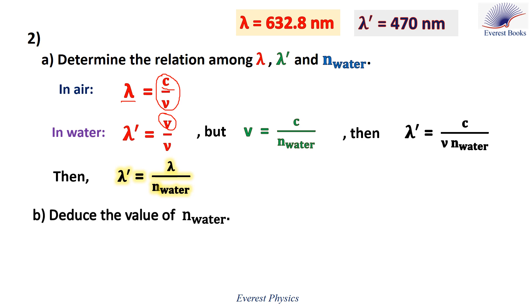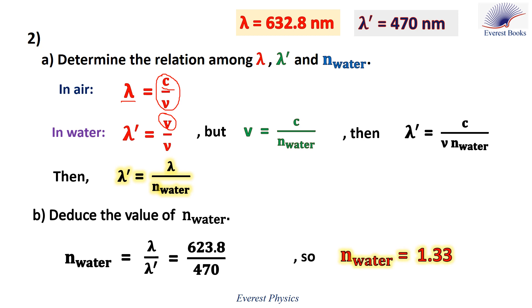Part 2b: deduce the value of n_water. Using the previous relation, n_water equals lambda over lambda prime. Lambda equals 632.8 nanometers and lambda prime equals 470 nanometers. Therefore, n_water equals 1.33. Note that n_water has no unit.